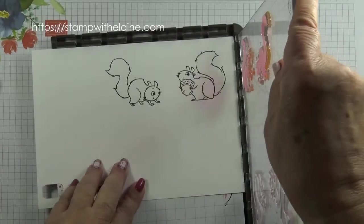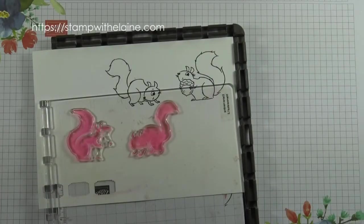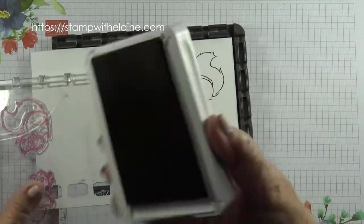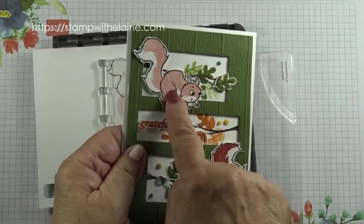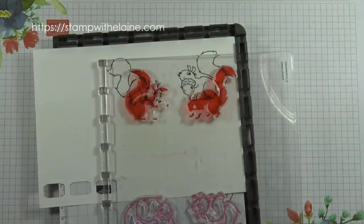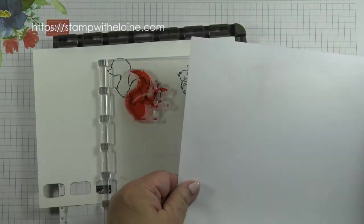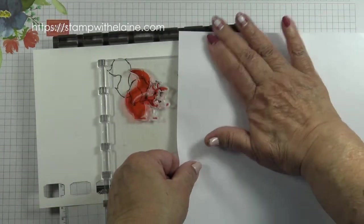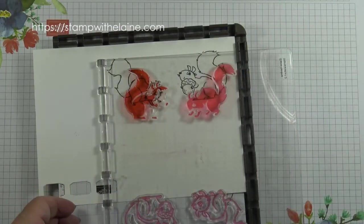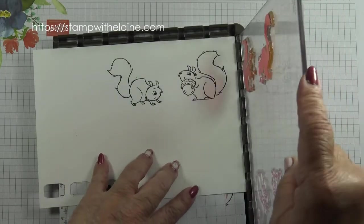Switch my plate over, use the cajun craze, ink up the cajun craze and I want one squirrel lighter than the other so I'm going to grab a piece of scrap paper and just put it over this squirrel and stamp.